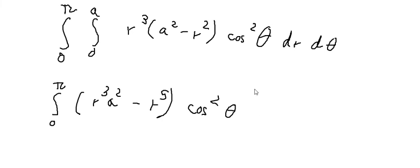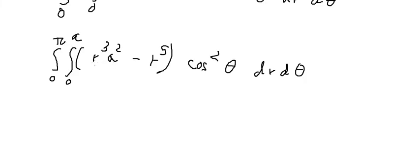We have dR dθ. The integral of R to the power of 3 gives R to the power of 4 over 4 A squared minus R to the power of 6 over 6.